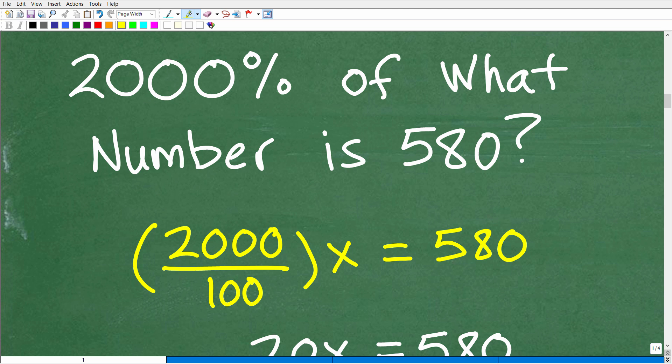Okay, so here we have 2,000% of what number is 580? What we want to do is translate this into a basic algebraic equation. So remember, we're trying to figure out the percent of some number, just like we were trying to figure out 70% of 120, we're trying to figure out 2,000% of some number. Now, remember, the way to get a percent of a number is we need to change this percent into a decimal. Now, again, how do you change a percent into a decimal? Remember, you divide by 100 or you move the decimal point over two places to the left. So we're going to translate this situation into an algebraic equation.